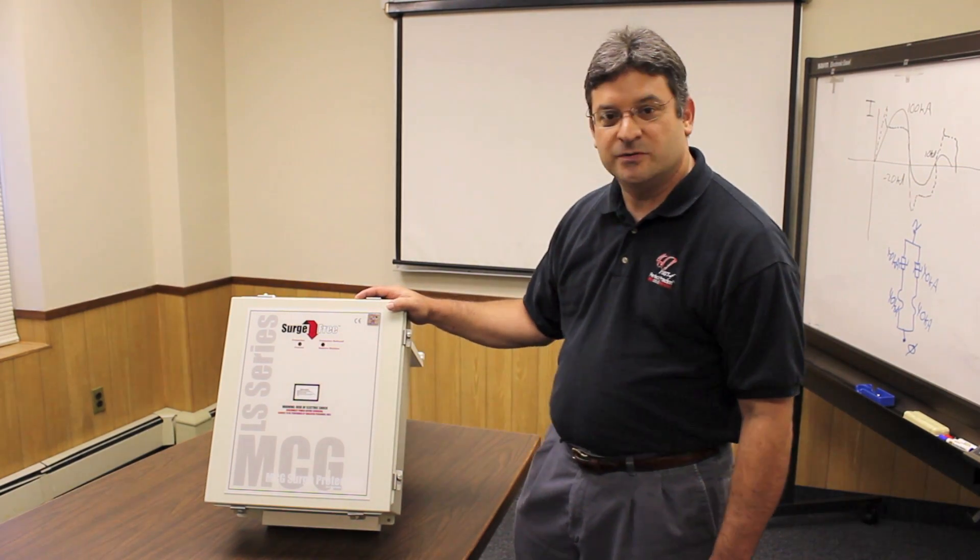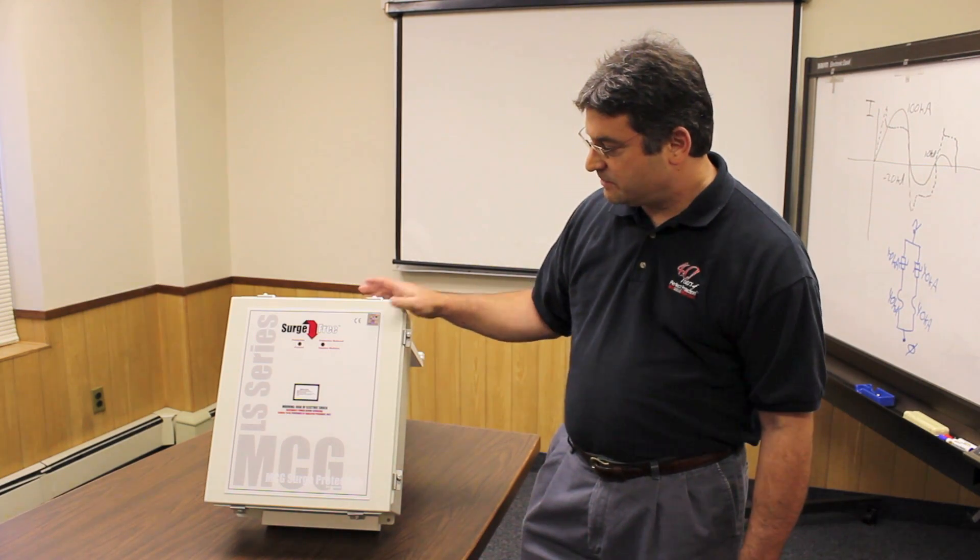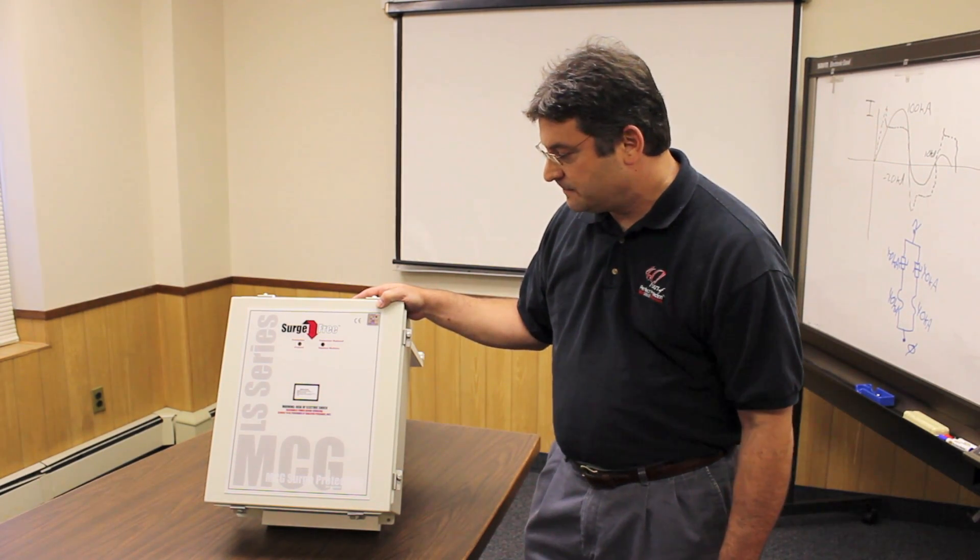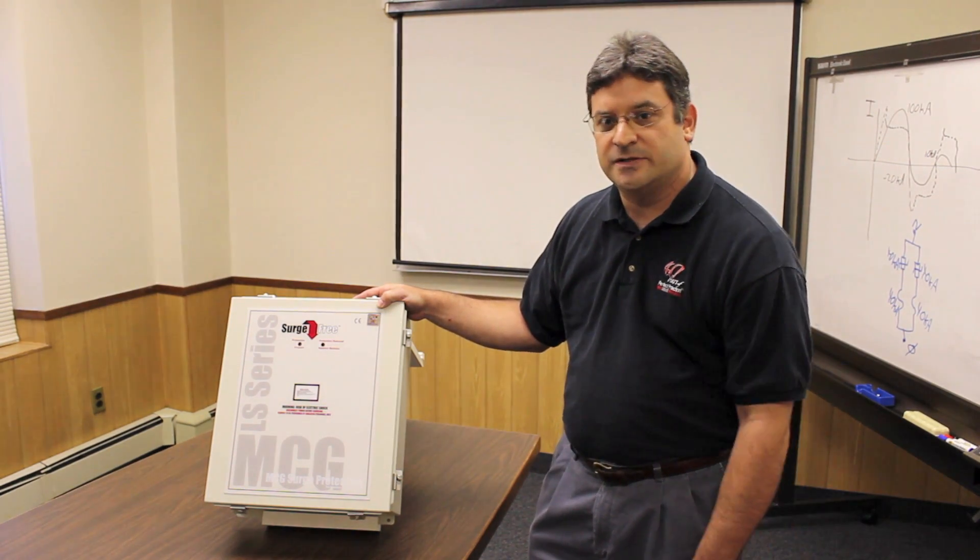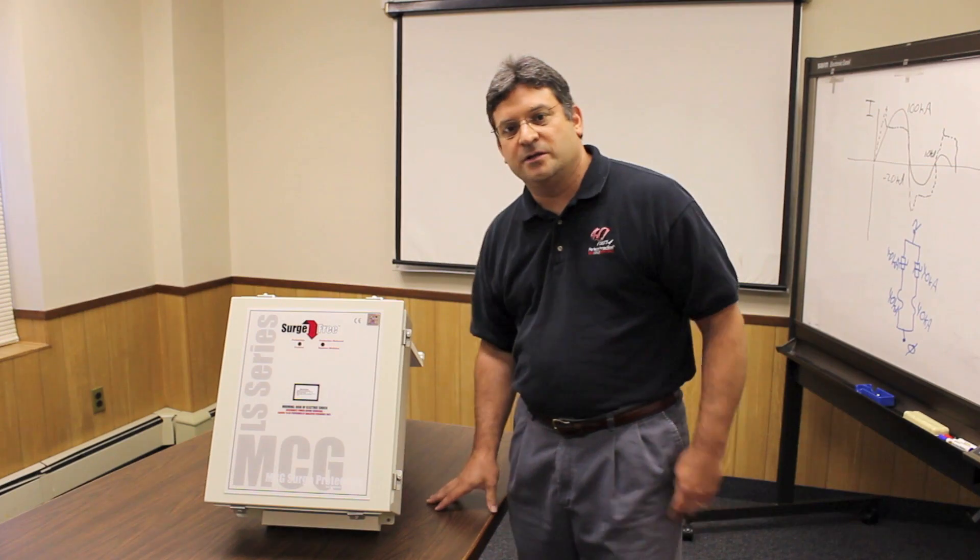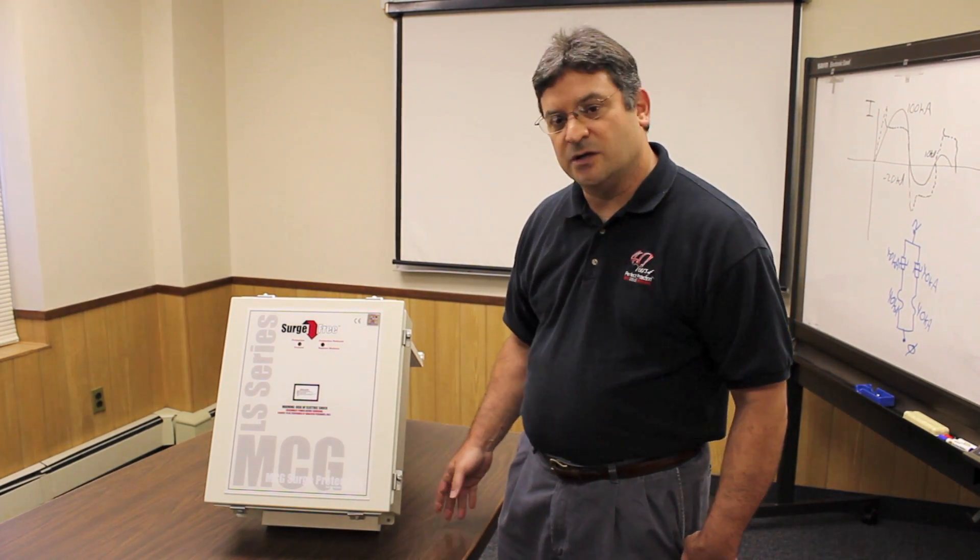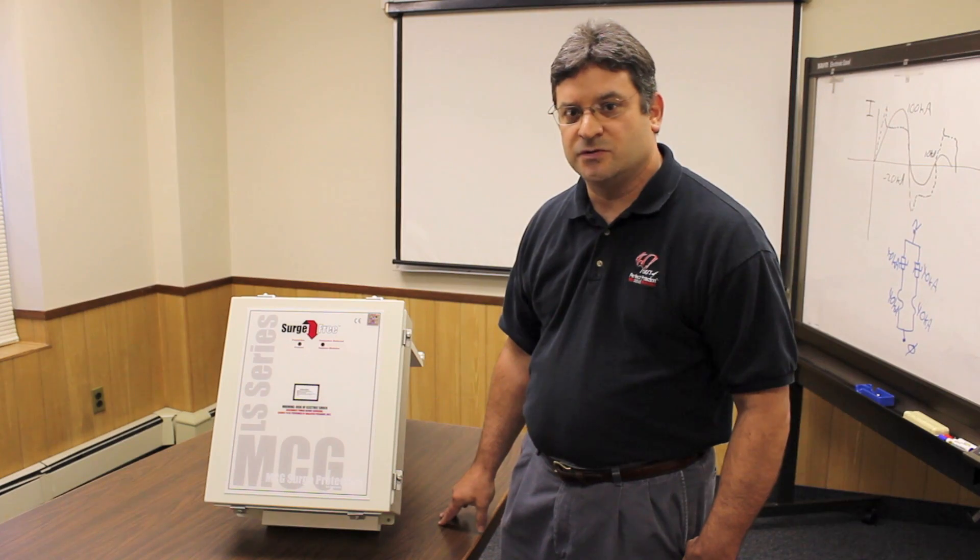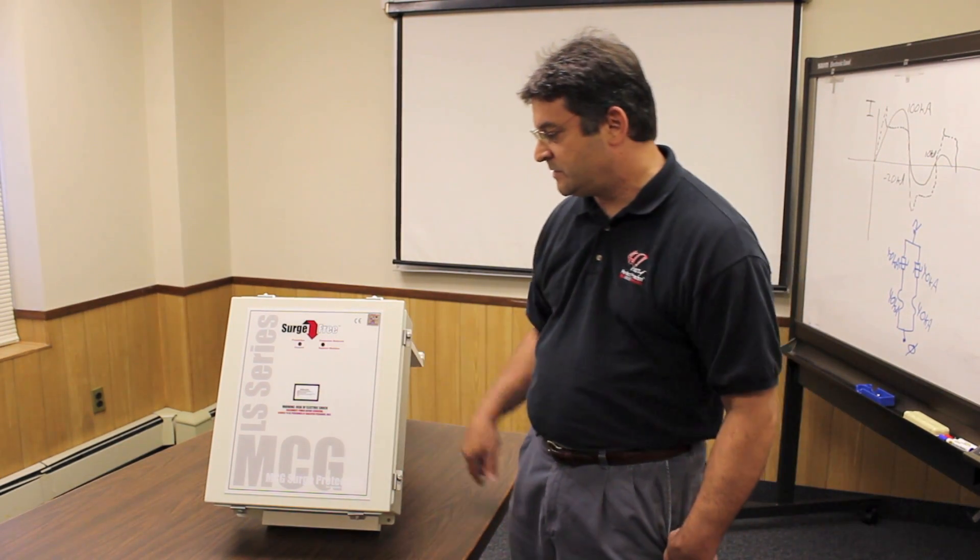Today I want to introduce you to our LS series of surge protection products. This model here is a 560 LS, but we also have the 300 LS, the 200 LS, and the 120 LS. The model name corresponds to the I peak per phase. The 120 is 120,000 amps per phase, the 200 is 200,000 amps, the 300 is 300,000 amps, and the 560 is 560,000 amps per phase.